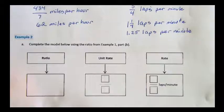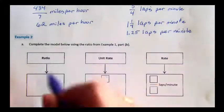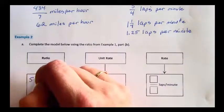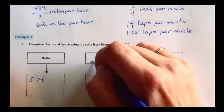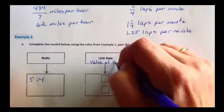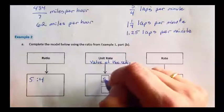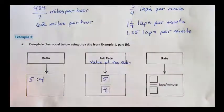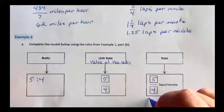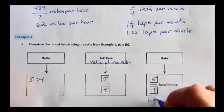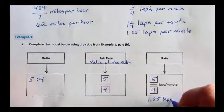Here's the model we're going to put in our interactive notebooks tomorrow. The ratio going with part B up here is 5 to 4 laps to minutes. Our unit rate, or the value of the ratio, is 5 fourths. Our rate is 5 fourths laps per minute, and we can reduce that to 1 and 1 quarter laps per minute.